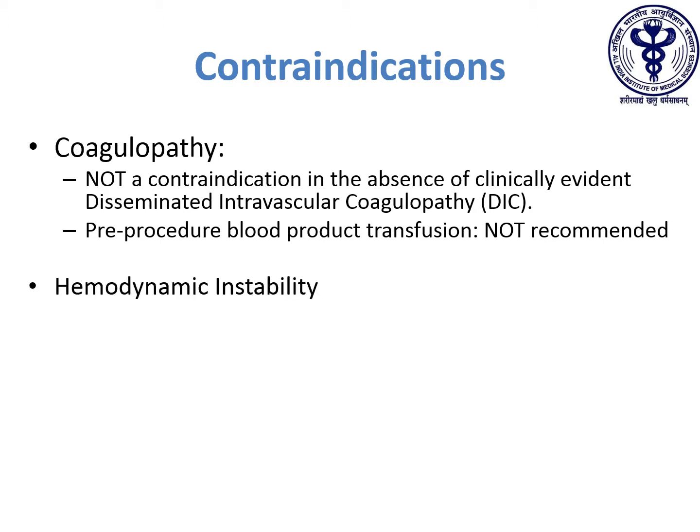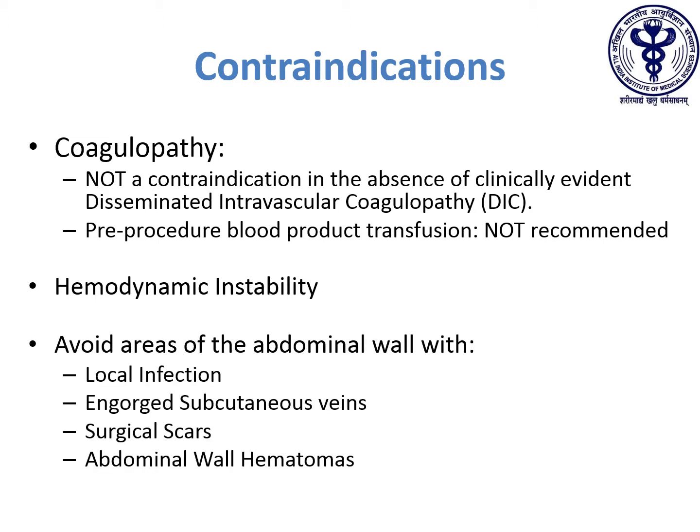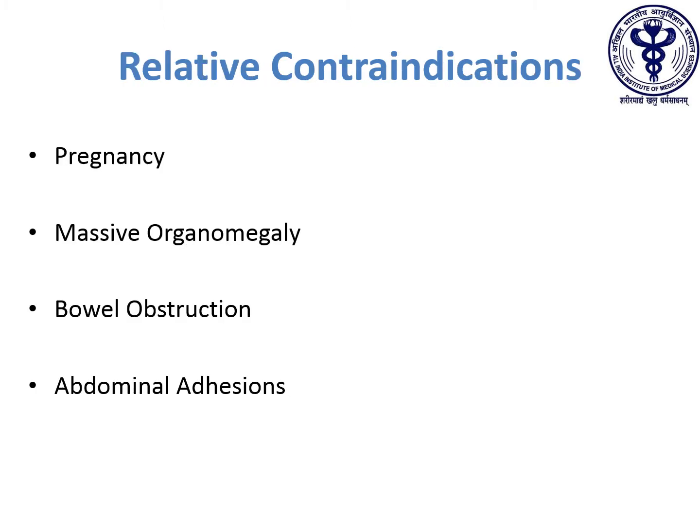Hemodynamic instability is an absolute contraindication to large volume paracentesis. Areas of the abdominal wall with local infection, engorged subcutaneous veins, surgical scars, or abdominal wall hematomas should be avoided while performing diagnostic or therapeutic paracentesis. Additionally, while the procedure may safely be performed in the following situations by experienced personnel, extreme caution is advisable in pregnancy, massive organomegaly, bowel obstruction, and abdominal wall adhesions.